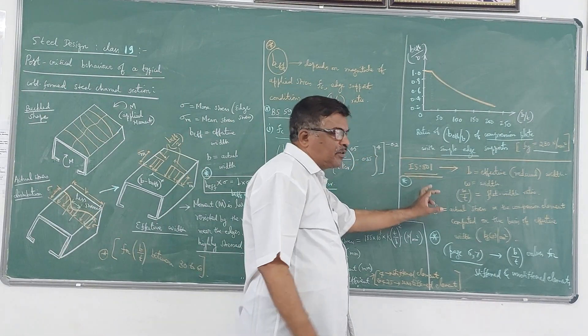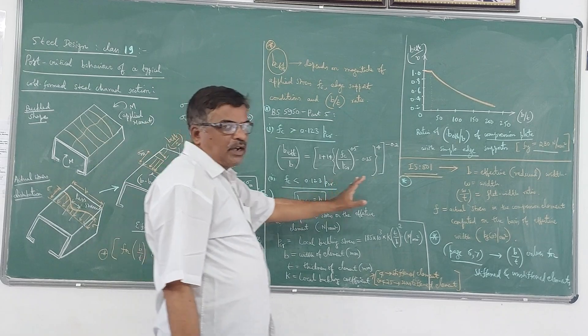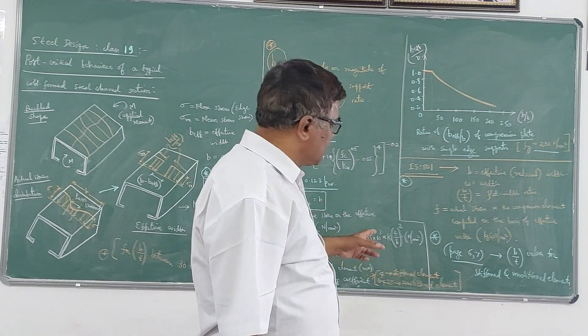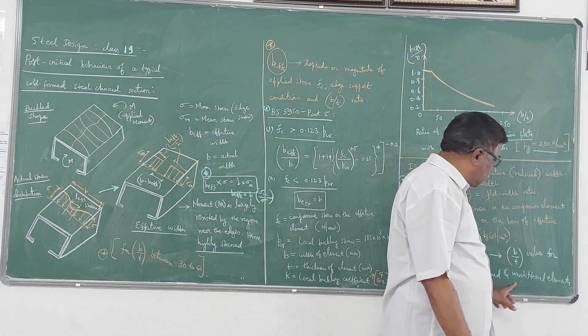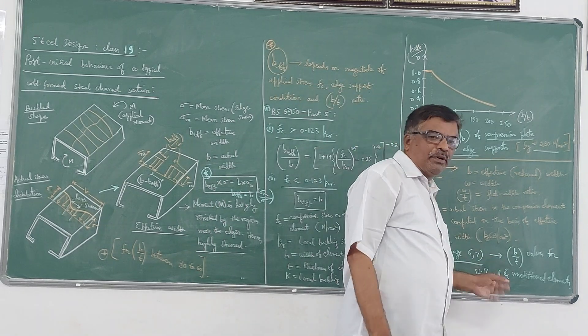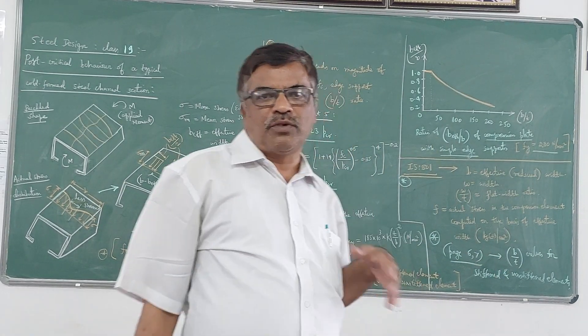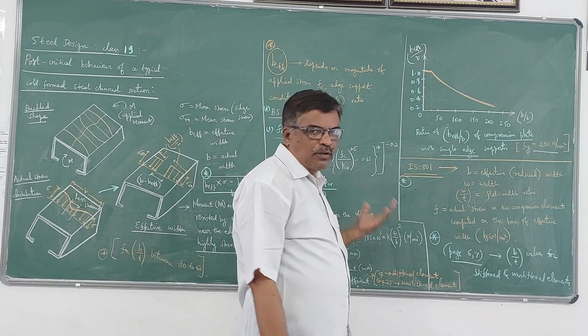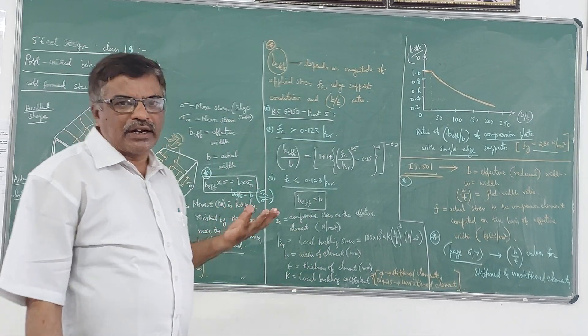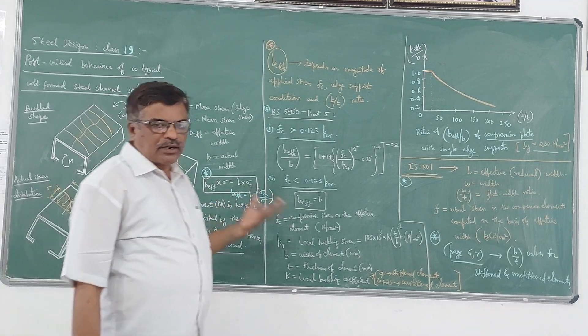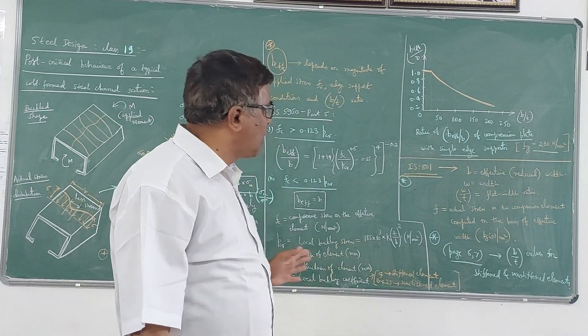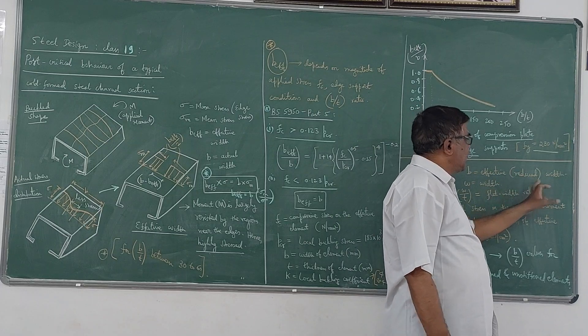Now as per IS 801, this is as per the British code. As per Indian code IS 801, if you refer the annexures 6 and 7 of that 801, that B by T values for stiffened and unstiffened elements are explained there. So there are certain equations which give the values of B by T depending on the type of the element which we are going to use for analysis and design of that cold-form steel members, whether it is a compression member or a bending member. So we have to study about the analysis of columns as well as beams. Later we are going to take a problem for that also. So one difference here is the notations are slightly different in IS 801. So the B is used for the effective radius of width.